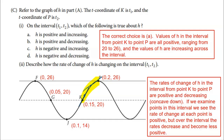That's the final problem for FRQ number three. You won't see this exact problem, but you will see the exact same framework: labeling points, building the sinusoidal function, and answering questions about rates of change. Be prepared for questions exactly like this on the exam, and the more you practice using the Ultimate Review Packet, the better off you're going to be.